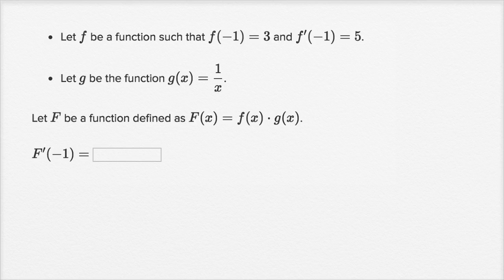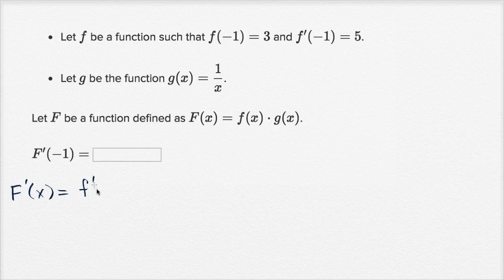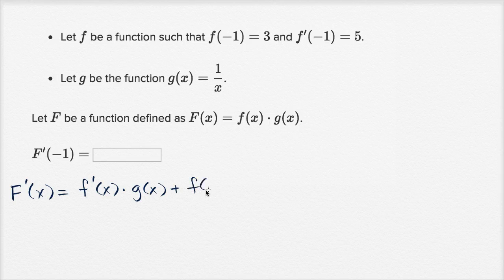Well, we can just apply the product rule here. Capital F prime of x is going to be equal to, since capital F of x is the product of these two functions, we apply the product rule — this is going to be f prime of x times g of x, plus f of x times g prime of x.